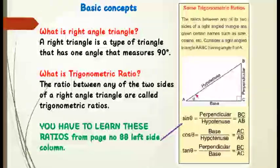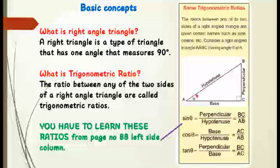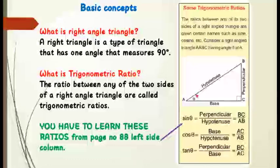Next, what are trigonometric ratios? The ratio between the two sides of a right angle triangle is known as trigonometric ratios. There are three ratios — you can see in the yellow box: sin theta, cos theta, and tan theta. Sin theta equals perpendicular over hypotenuse, cos theta equals base over hypotenuse, and tangent theta equals perpendicular over base.